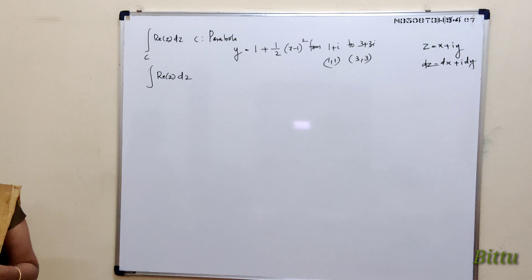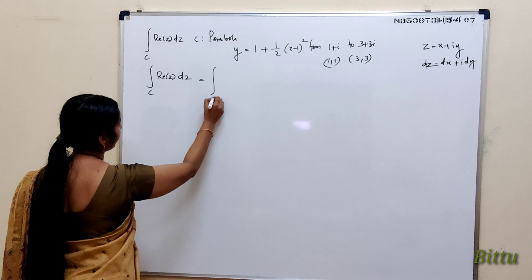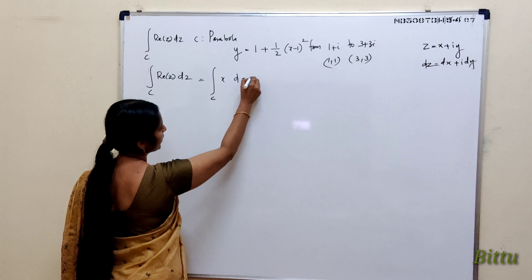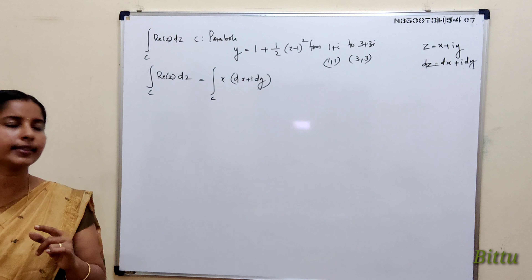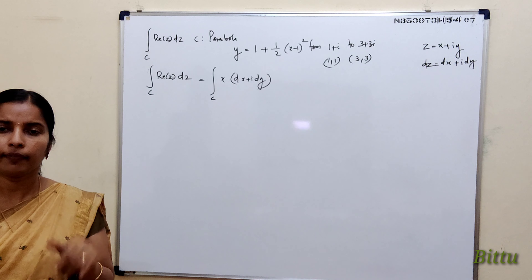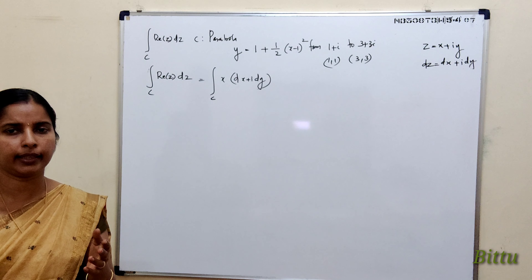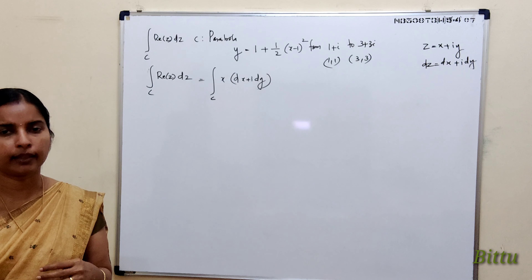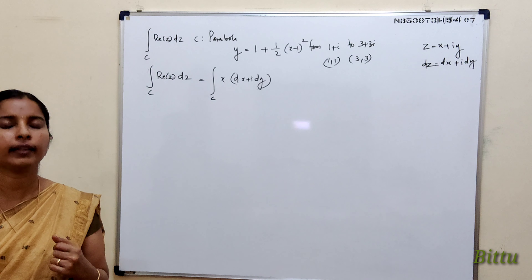Along the parabola y = 1 + ½(x−1)². The integral over C of Re(z) dz equals integral over C of x (dx + i dy). To evaluate, convert to a single variable. On C, y = 1 + ½(x−1)², so dy = 2·(½)·(x−1) dx = (x−1) dx. We need to consider the path of integration to convert to single variable.